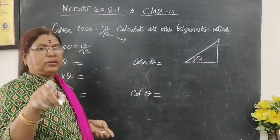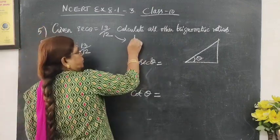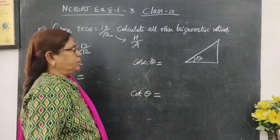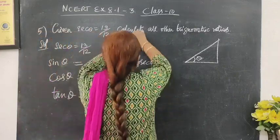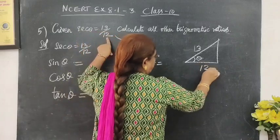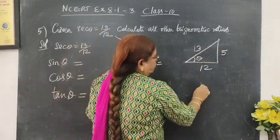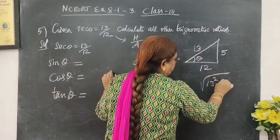Cos theta is adjacent side by hypotenuse, so secant theta is hypotenuse by adjacent side, which is 13 by 12. So hypotenuse is 13, adjacent side is 12. The third side will be 5, using the Pythagorean theorem: root of 13 squared minus 12 squared equals root of 169 minus 144 equals root of 25 equals 5.